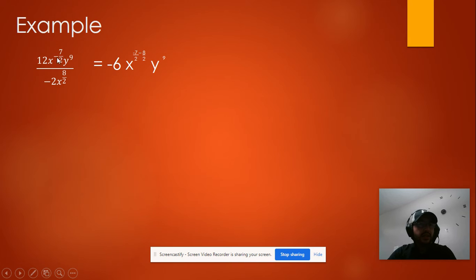Then we're going to subtract negative 7 halves minus 8 halves. We are same base, we are subtracting the exponents. And then the y, we just have the y. So we're going to leave it here, y to the 9.